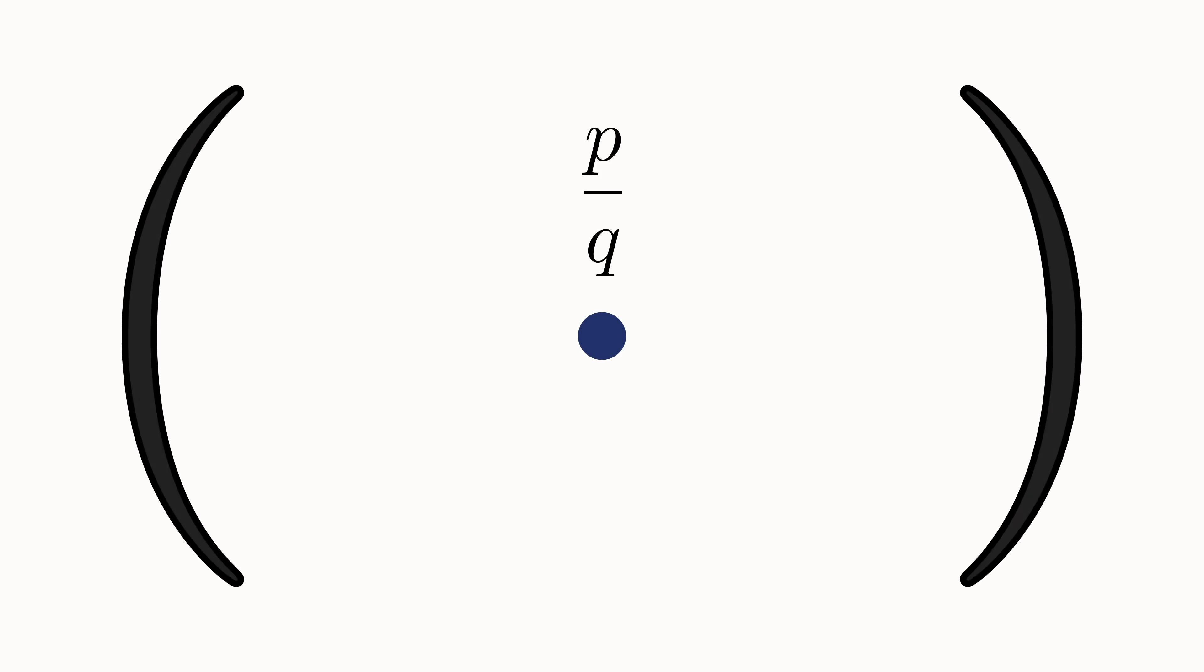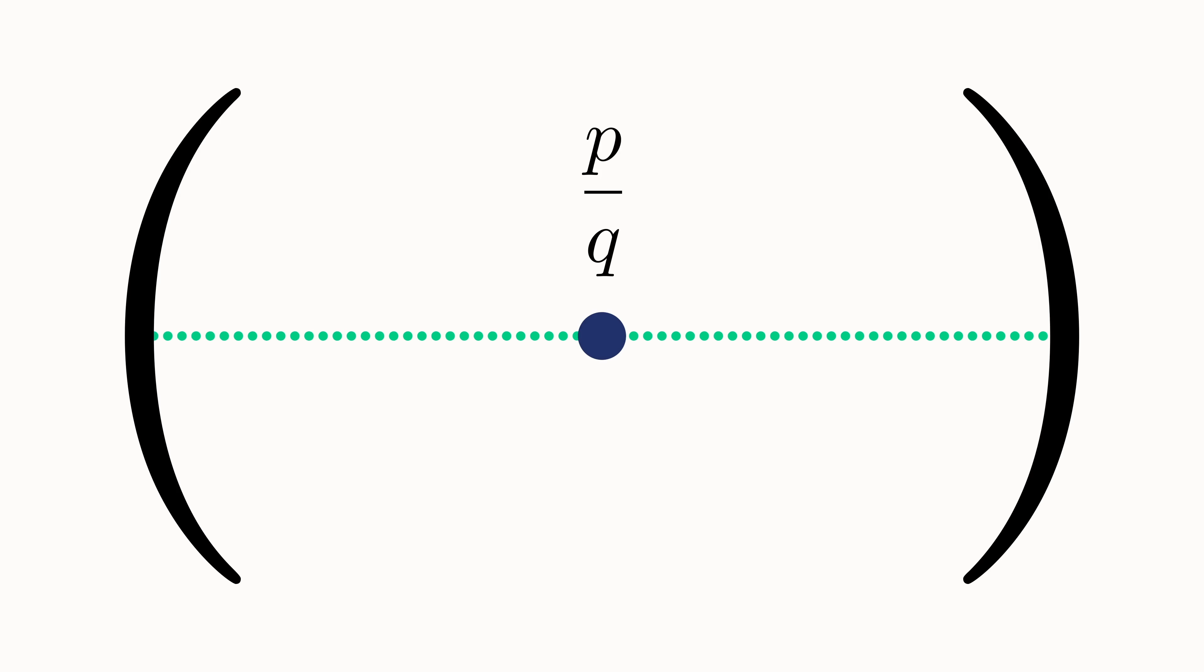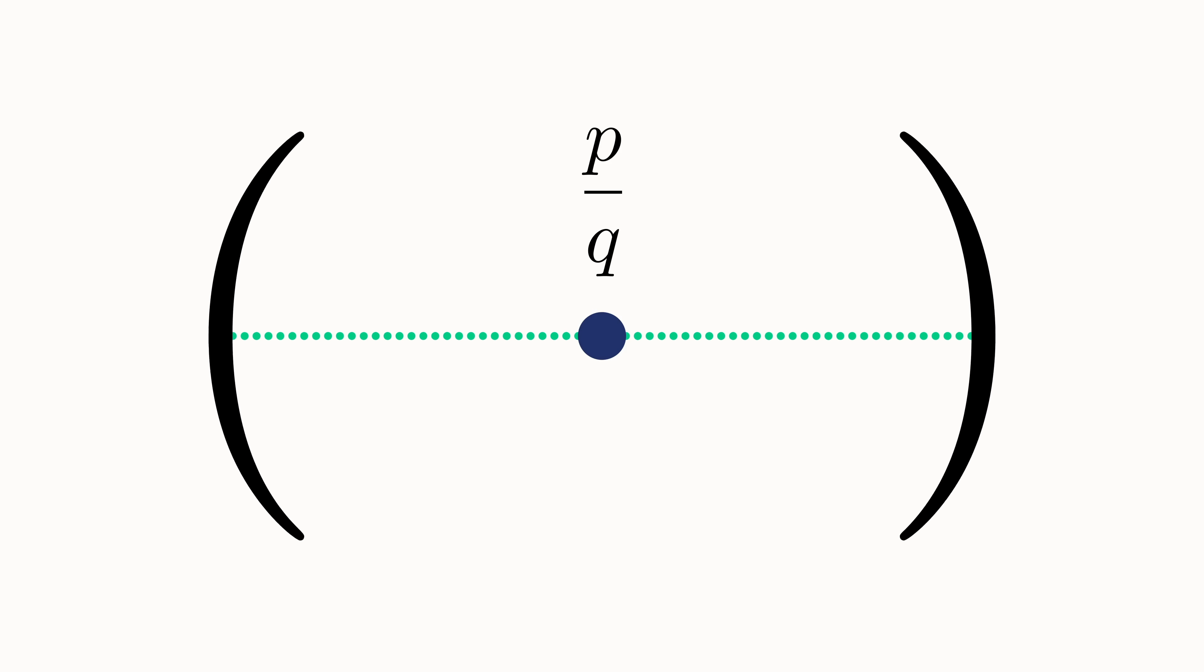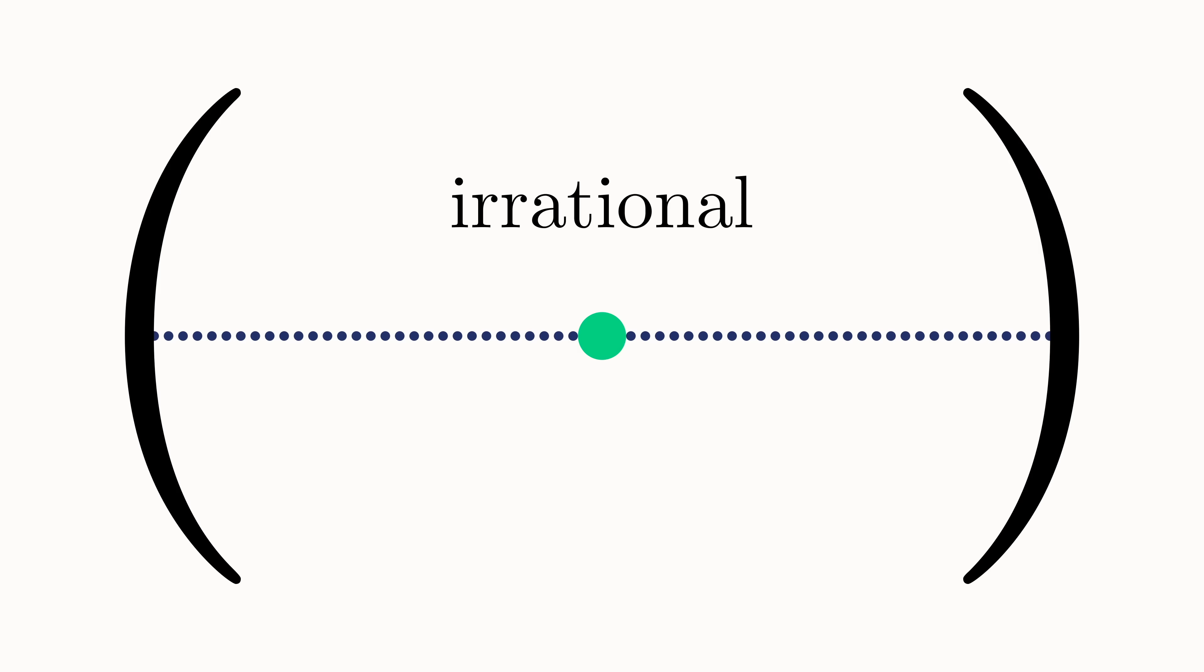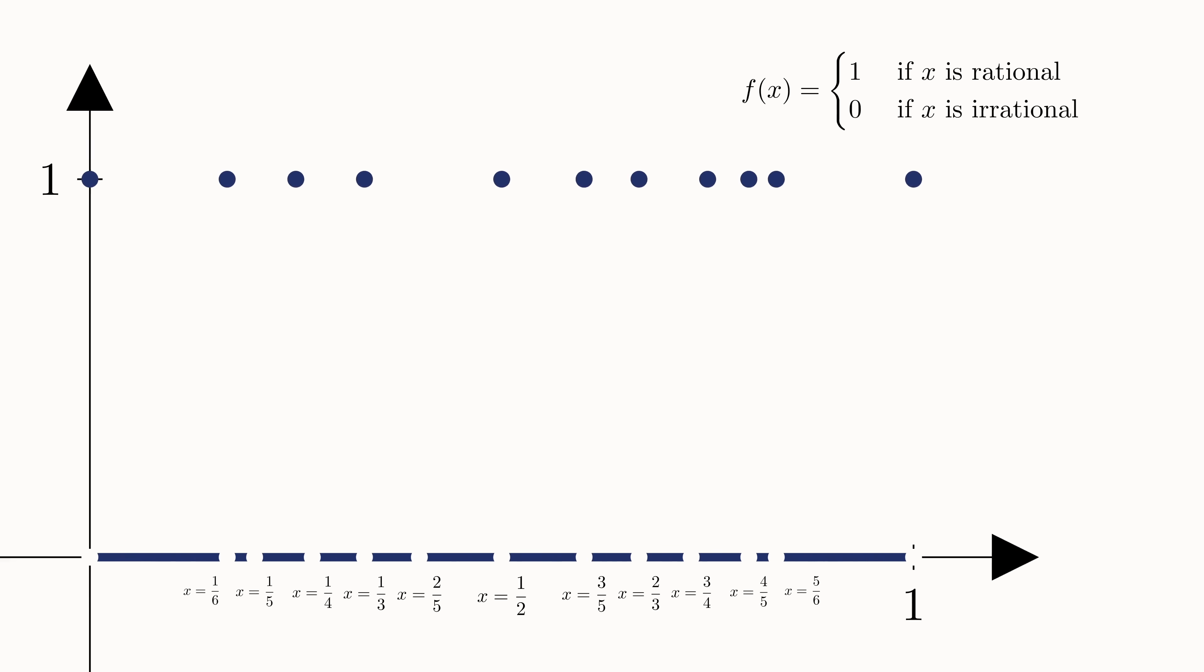No matter how small of an interval you make at a specific rational, you will always also capture an infinite number of irrationals. And the same goes the other way. For any interval around an irrational, you are guaranteed to have an infinite number of rationals inside.